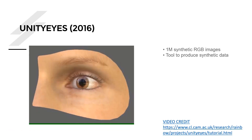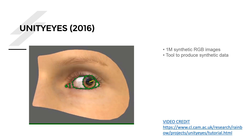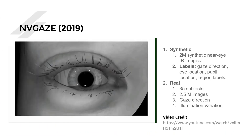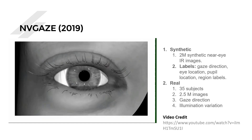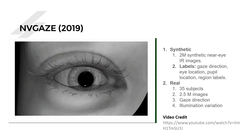In 2016, a new dataset called UnityEyes was released — a massive dataset of 1 million synthetic RGB images. They also released the tool so you can produce your own synthetic data. In 2019, NVIDIA released NVGaze, a massive dataset of 2 million images. Unlike other datasets, these are IR images rather than RGB. Labels provided include gaze direction, eye location, pupil location, and region labels with each image.